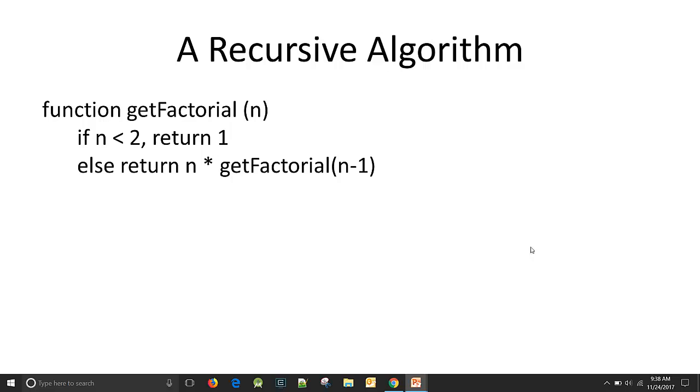So the recursive algorithm works like this. Function get factorial of n. If n is less than 2, in other words if it's 0 or 1, return 1. Otherwise, we're going to return n times get factorial of n minus 1. So this would be like 5 times get factorial of 4, right? That's it. That's how simple the get factorial recursive algorithm is. It's very simple, there's two lines of code.